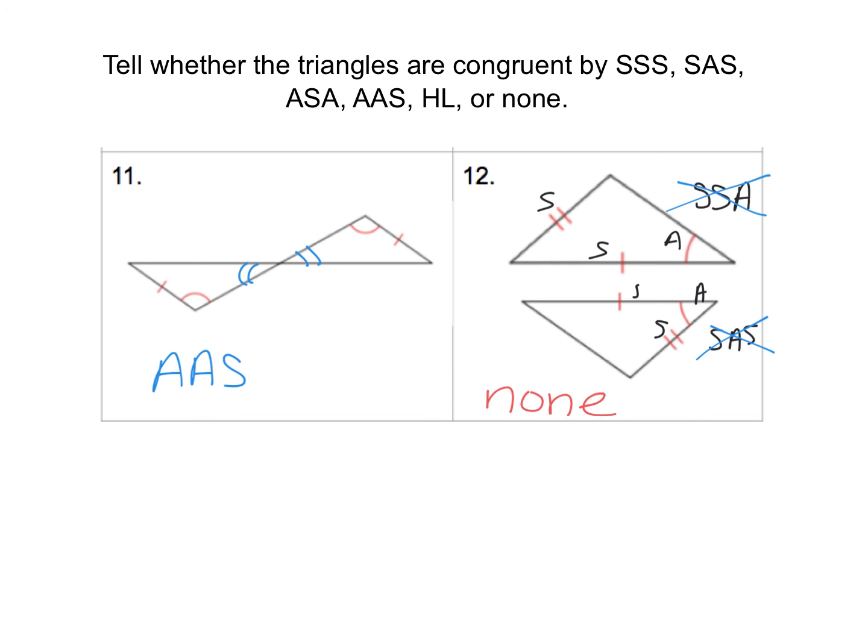This concludes lesson 4.4 to 4.6, congruent triangles review. I hope this has helped you review all of the different ways that we've learned to show triangles are congruent. Your homework assignment will be very similar to questions 1 through 12 that we went through in our interactive notebook, where you'll be given a pair of triangles and you'll have to state if you have enough information to show they're congruent by one of our five postulates, or if it doesn't match any of those, you'll choose none. So, thanks for watching and good luck as you try some problems on your own. Bye!